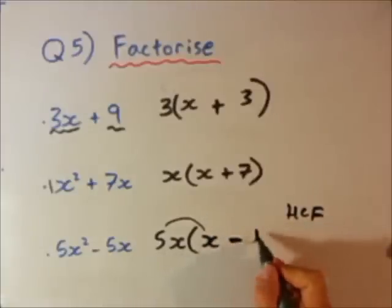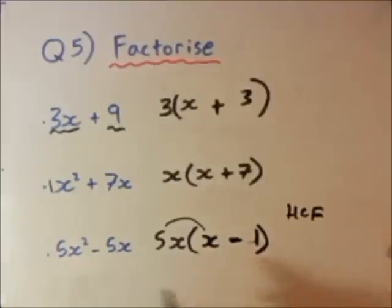So our final answer, factorising, will be 5x brackets x minus 1. Let's go check that. 5x times x is 5x squared, minus 5x times 1, 5x. And that's the right hand side.